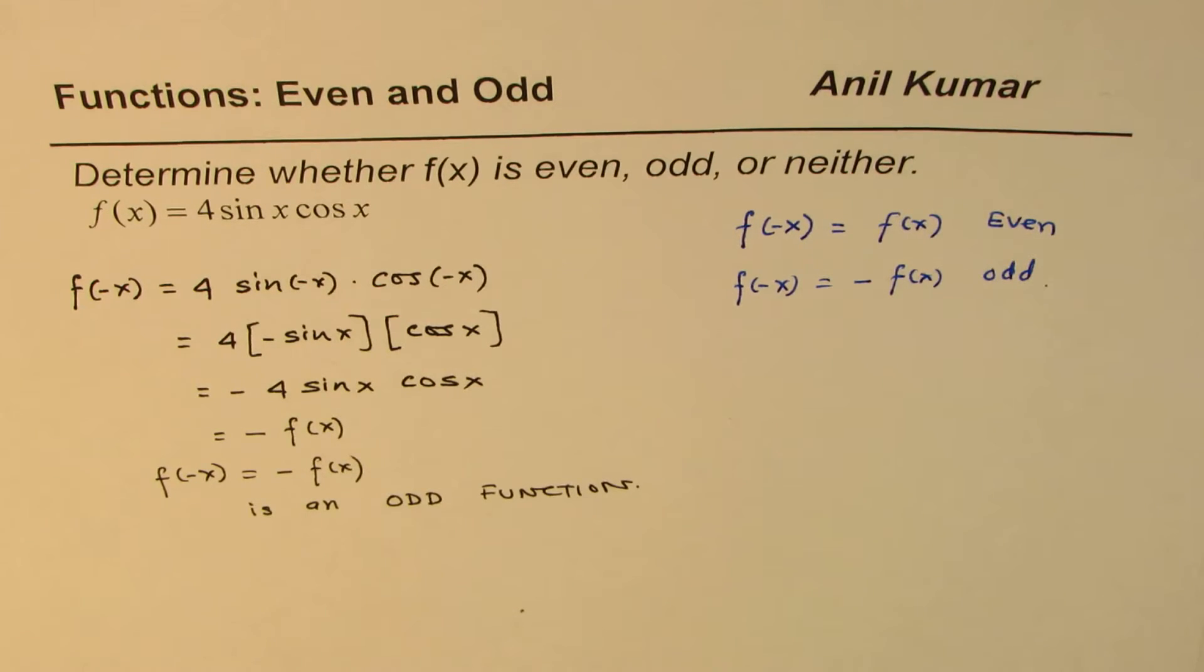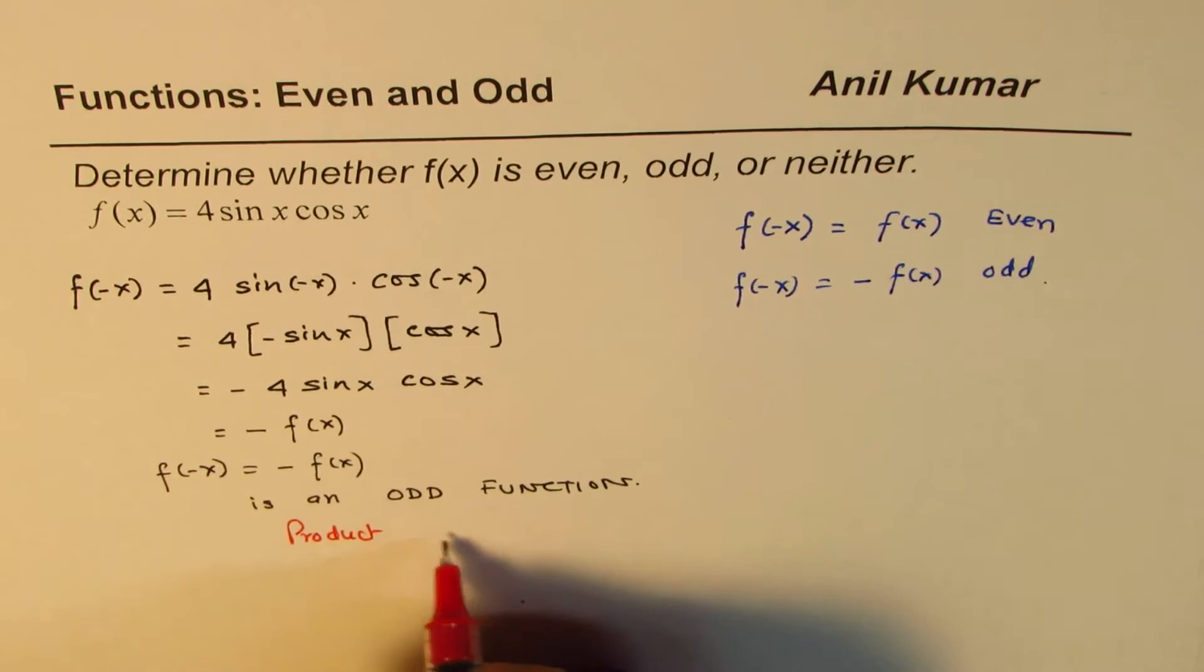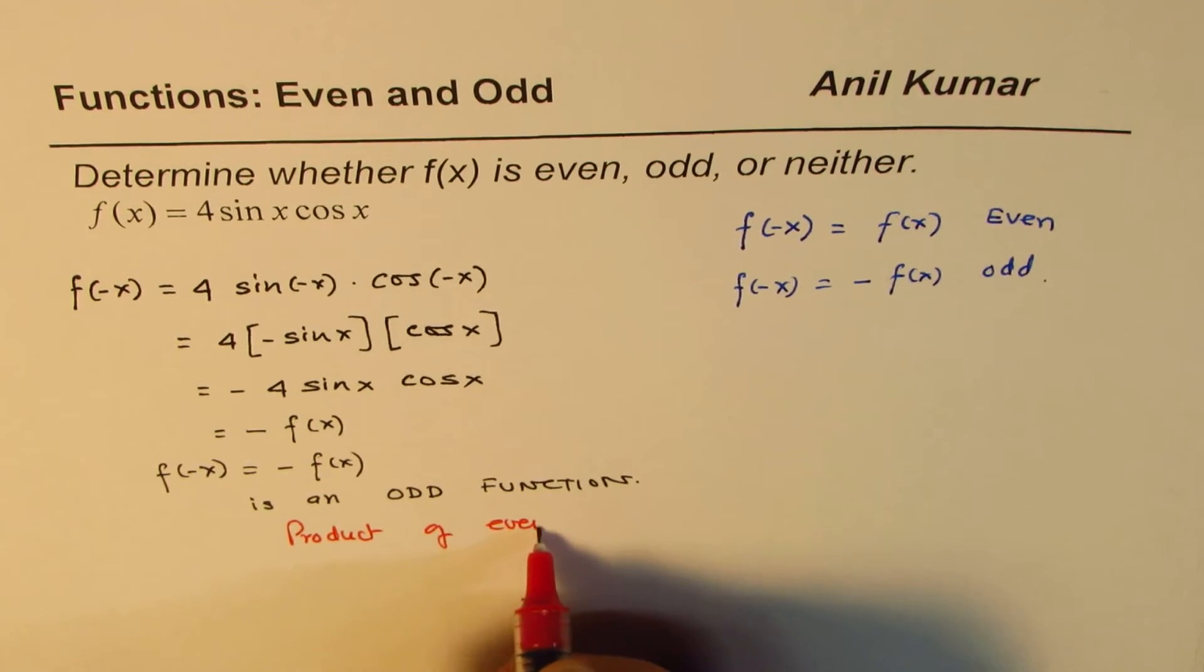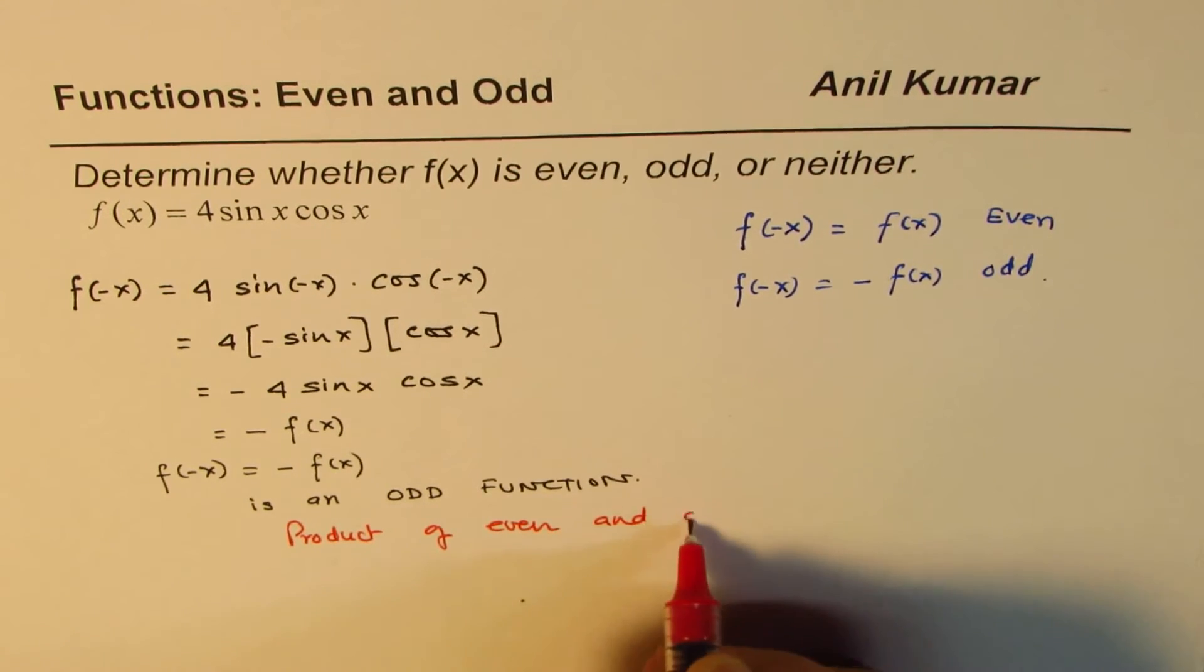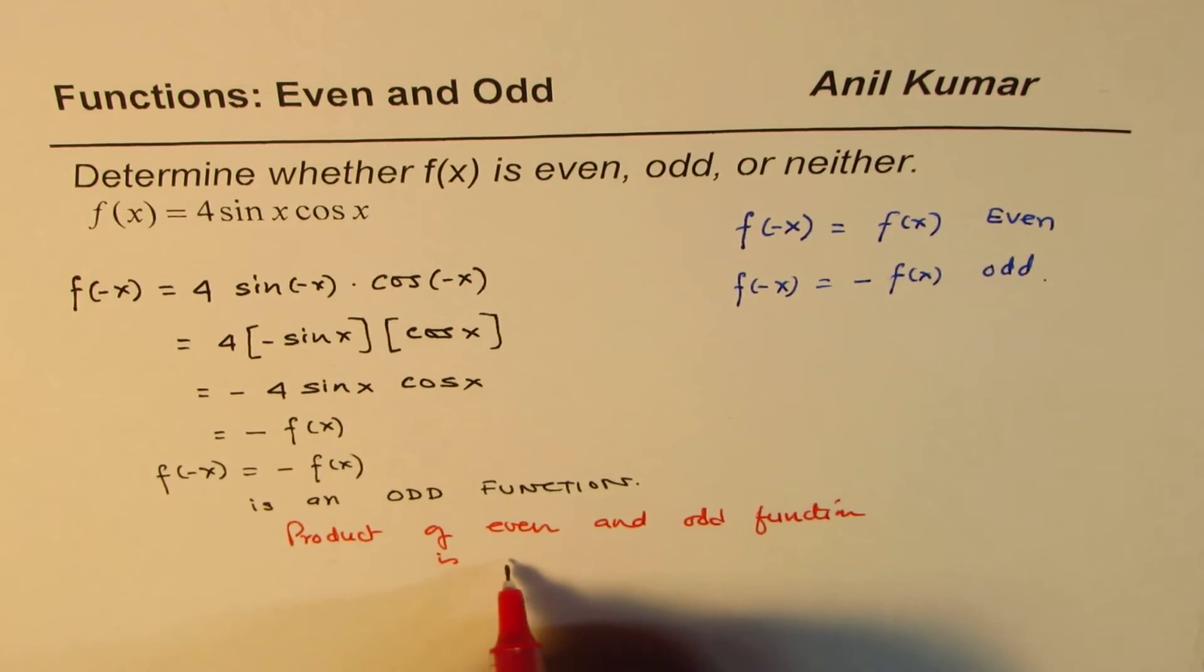You can also see that the product of even and odd functions is always odd. Let me write down: product of even and odd function is an odd function.